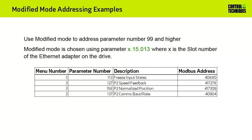Modified mode is used to address parameter numbers greater than parameter number 99. To use Modified mode, you must set parameter number 13 in menu number 15 of your Ethernet interface to Modified. In my example, I'm using a Digitax HD, so Modified mode can be changed by entering slot number 3, menu 15, parameter 13. If you're using a Unidrive M700, it is slot 4, menu 15, parameter 13. If you're using an SI Ethernet module, it would be slot 1, 2, or 3, depending upon where the SI Ethernet module is installed.